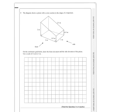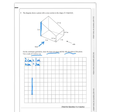Question 3. The diagram shows a prism with a cross-section in the shape of a trapezium. On the grid below, we have to draw the front elevation and the side elevation of the prism using a scale of 2 centimetres to 1 metre. For the front elevation, we've got to be 2 metres high — that would be 4 centimetres. Then we want 2 metres for the base, so 4 centimetres, and then half a metre, which is 1 centimetre. We join these up with a ruler and label that as front.